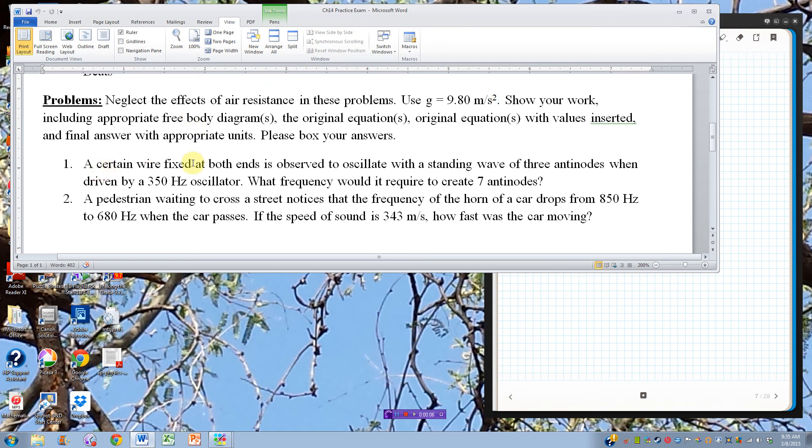A certain fixed wire, fixed at both ends, is observed to oscillate with a standing wave of three antinodes when driven by a 350 hertz oscillator. I want to know what frequency it would require to create seven antinodes.